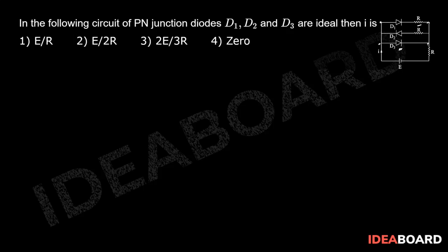We know that current chooses the path of zero resistance. So all the current will flow through the diode D3 and will get back to the battery.